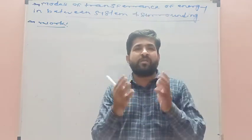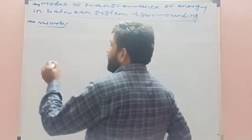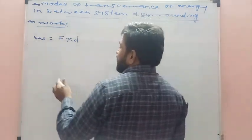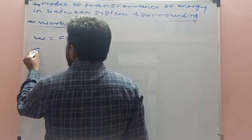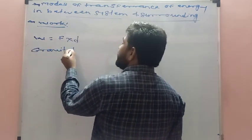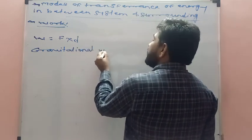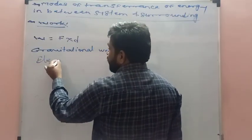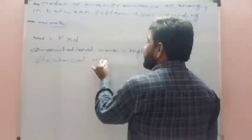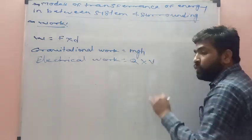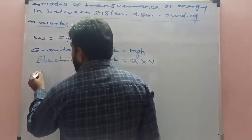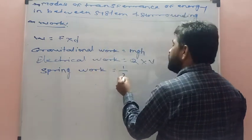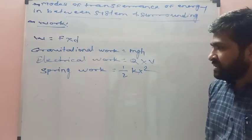Work has different forms. One is displacement work — force into displacement. Another is gravitational work, which is MGH. Another work is electrical work, which is Q into V. Another work is spring work, which is one-half K into X squared.